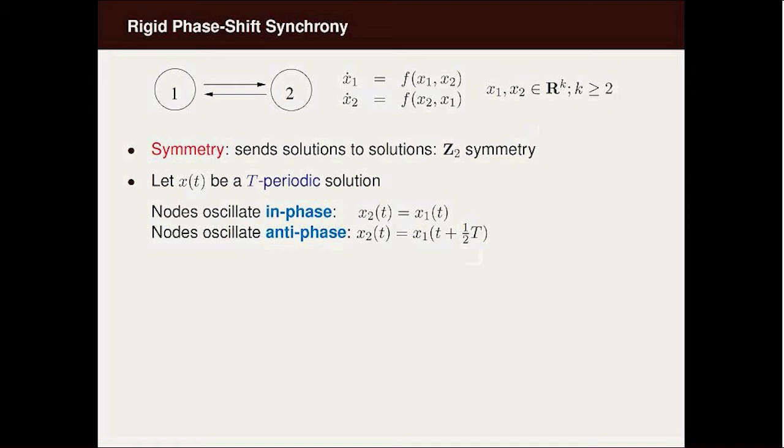I'd like to begin these talks with the simplest example of a two-node system where the system of differential equations is given here: x1 dot is some function of x1, the internal state variable for the first node, and it's coupled from the second node, so it's a function of x2, the state variable for the second node. x2 dot is the same f but now of x2, x1.